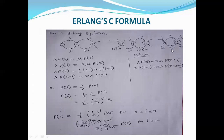Substituting the value of P(0), this waiting probability becomes the complete Erlang C formula. So Erlang B formula is applicable for the blocking (lost call) process, and Erlang C formula is applicable for the waiting (delay) process.